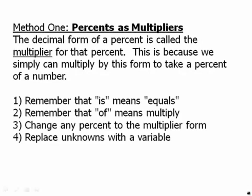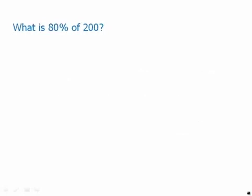When using percents as multipliers, remember that 'is' means equals and 'of' means multiply. Change any percent to the multiplier form and replace unknowns with a variable. For example: what is eighty percent of two hundred? The unknown 'what' is x; 'is' becomes equals; eighty percent becomes the multiplier 0.8; and we multiply that 'of' times two hundred. Translating that sentence into math, we get 0.8 times two hundred, which equals one hundred and sixty.